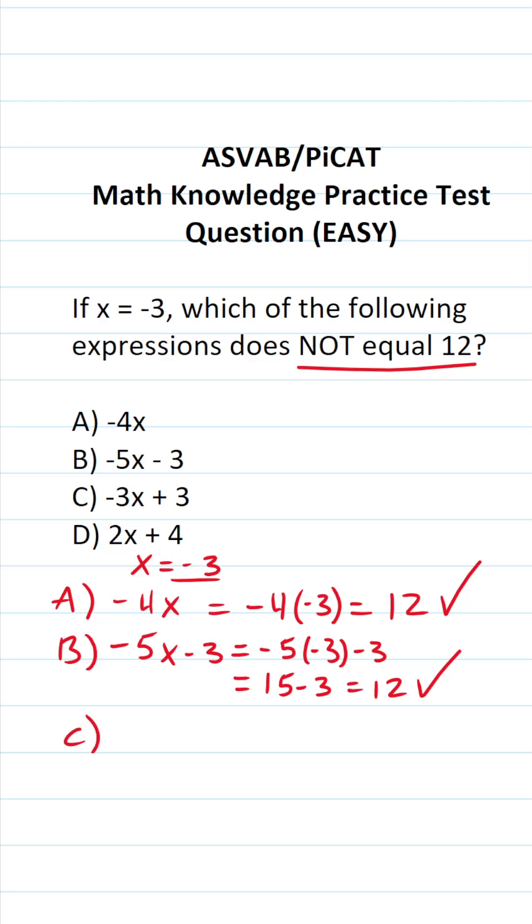Let's check c. We have negative 3x plus 3. We're going to let x equal negative 3. So this becomes negative 3 times negative 3 plus 3. Negative 3 times negative 3. A negative times a negative is going to be a positive. So this is 9 plus 3. 9 plus 3 is in fact 12. So c checks out.